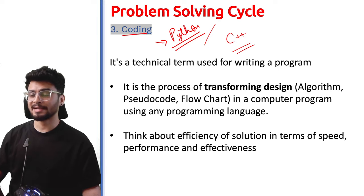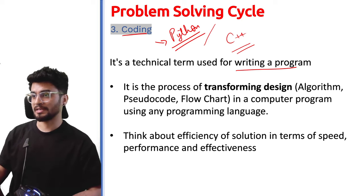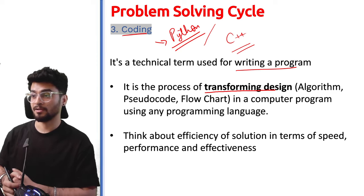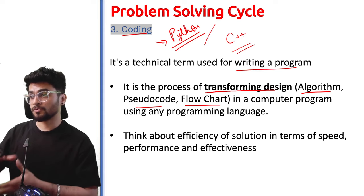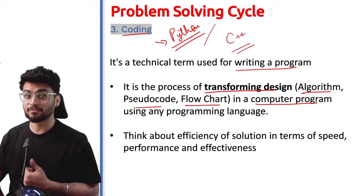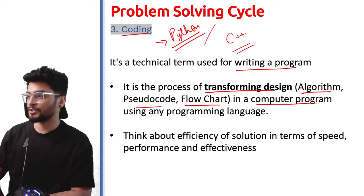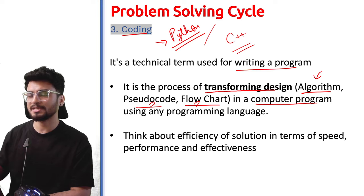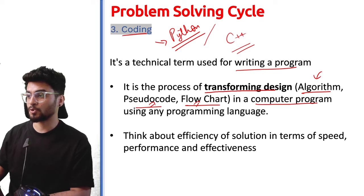Coding is actually a technical term for writing a program. It is a process where your design from the second step — the algorithm, pseudocode, or flowchart — is converted into a computer program. A computer program is a set of instructions written in a language the computer can understand. The algorithm, pseudocode, or flowchart is written in a language humans understand, but for the computer you must use a programming language.